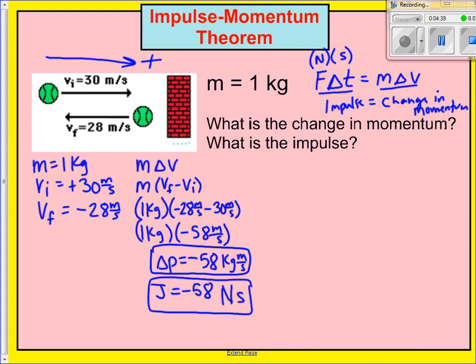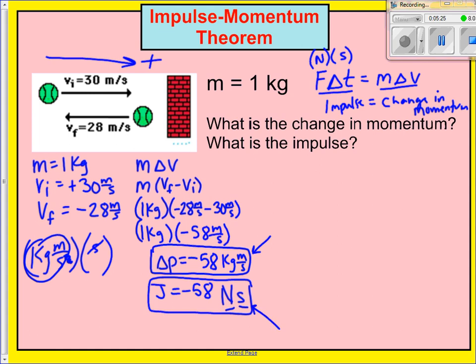Students often get confused about why impulse and momentum have different units when they're equal to each other. They really don't have different units. A Newton is a kilogram meter per second squared. If you multiply that by seconds, one second cancels and you're left with kilogram meter per second. So it really is the same thing. By convention, physicists use kilogram meter per second when talking about momentum and Newton seconds when talking about impulse, but they truly are the same unit.